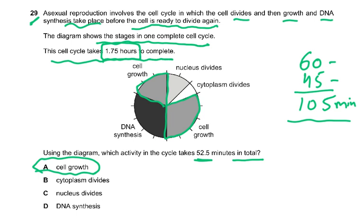It was easy because 52.5 minutes is half the total. The total is 1.75 hours — 1 hour is 60 minutes and 0.75 hours is 45 minutes — giving a total of 105 minutes. So 52.5 is half of 105.